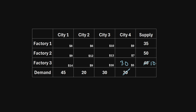Factory three still has 10 units remaining. Since city four's total demand of 30 has been fully met, we cross out the remaining cells in city four's column — we won't use those shipping routes, as sending additional units would exceed the demand.